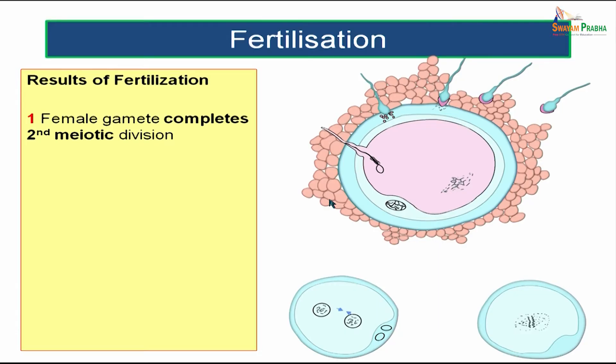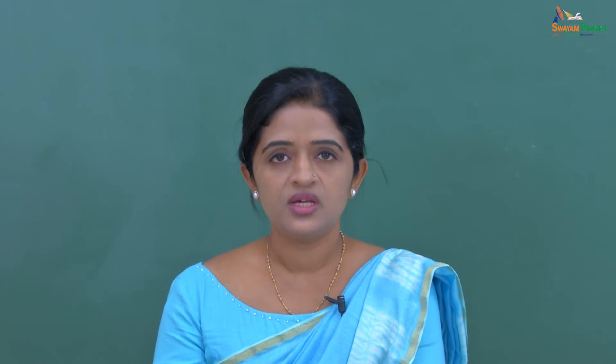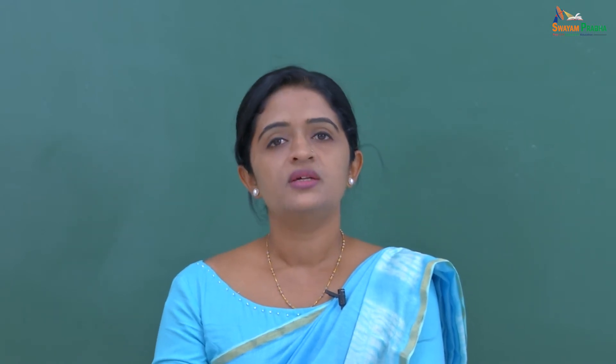Let us see the results of fertilization. At the time of fertilization, the female gamete will be completing its second meiotic division. At the time of birth, every female child will be having oocytes arrested in the prophase of the first meiotic division, because oogenesis starts before birth. There are mainly two meiotic divisions: meiosis 1 and meiosis 2. The first meiotic division will be completed just before ovulation, and the oocyte will be entering into the second meiotic division, which will again be arrested in the metaphase phase.